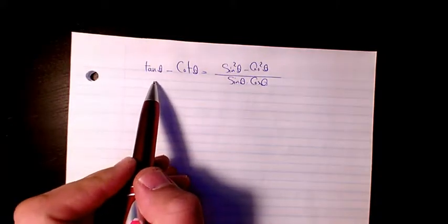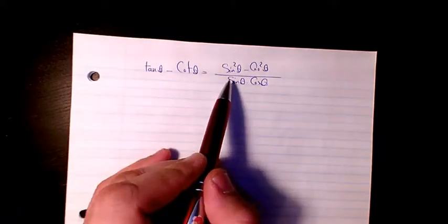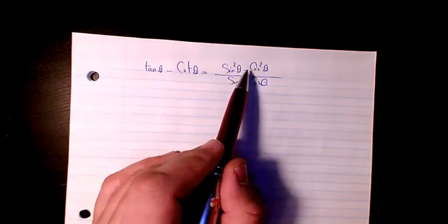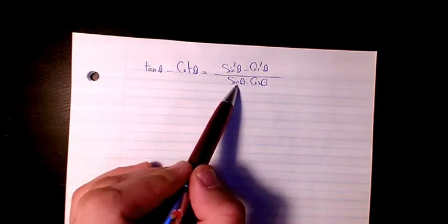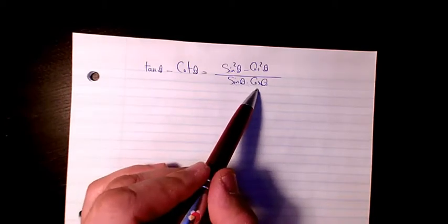In this example, I have tan theta minus cotin theta equals sine squared theta minus cosine squared theta divided by sine squared—sorry, sine theta times cosine theta.